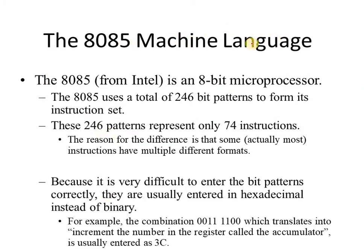The 8085 microprocessor from Intel is an 8-bit microprocessor, so we have 256 combinations. The 8085 uses a total of 246 bit-patterns to form its instruction set. So the instruction set size is 246 bit patterns.